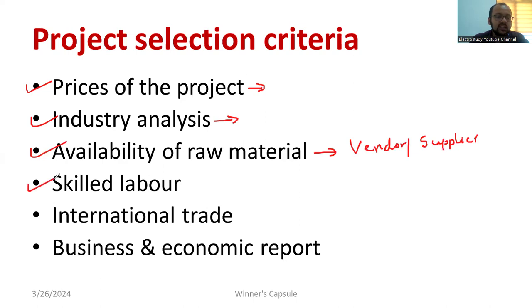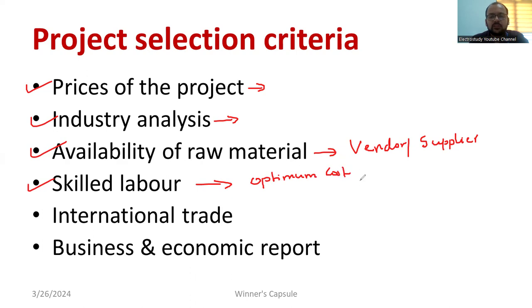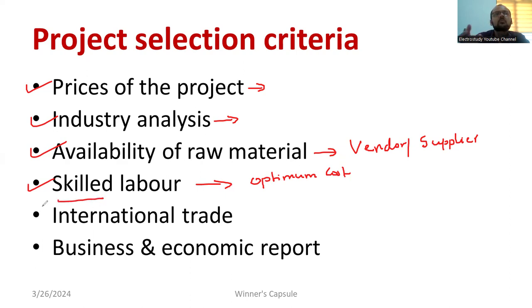Then skilled labor — availability of labor with optimum cost. In the case of our country, India, so many laborers are available at a cheap price. That's why most of the Western companies have started organizations in India, because the most skilled laborers are available at a cheap price. That's the advantage. Most Western MNCs are trying to relocate to India because of this reason.